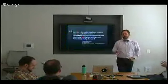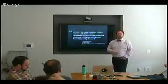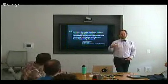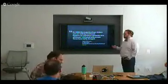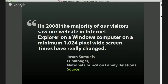I stumbled on a blog post from Jason Samuels, IT manager of the National Council on Family Relations — an organization that helps families communicate better. He looked at their Google Analytics over a four-year period from 2008 to 2012, the period just after the iPhone launch and the smartphone explosion, and chronicled how things had changed.